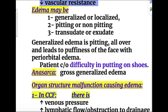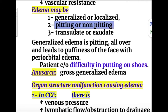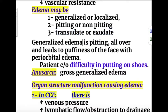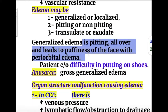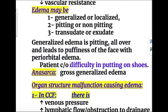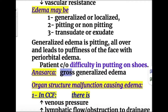The types of edema may be generalized or localized, pitting or non-pitting, and it may be transudate or exudate. Generalized edema presents all over the body, leading to puffiness of the face with periorbital edema, and patients complain of difficulty putting on shoes. Anasarca is gross generalized edema.